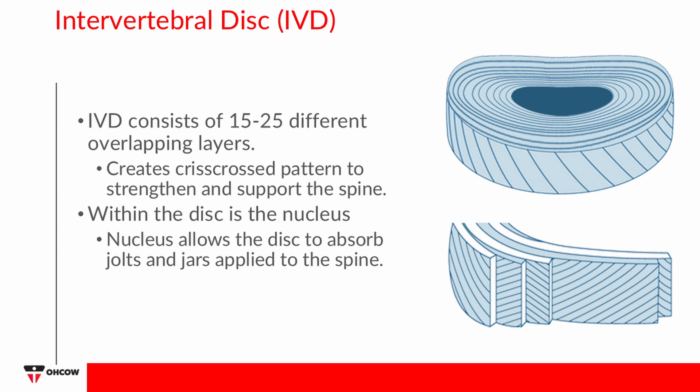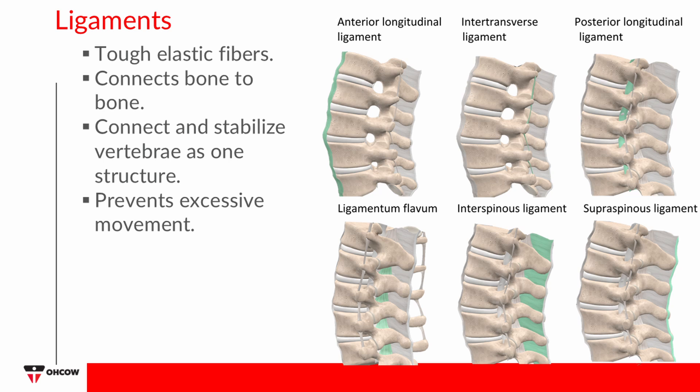Disc water loss creates more stress around the surrounding muscles and ligaments. Intervertebral discs begin deteriorating and growing thinner by age 30. A common misconception is that we slip our discs — discs do not actually slip. The jelly-like material slips between vertebrae, which gives the impression that the disc has slipped, and the protruding disc then puts pressure on the nerves. Ligaments are tough elastic fibers designed to prevent excessive or abnormal movement of the spine, connecting and stabilizing the vertebrae as one continuous structure.